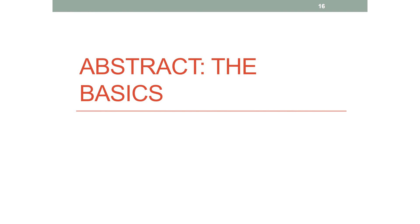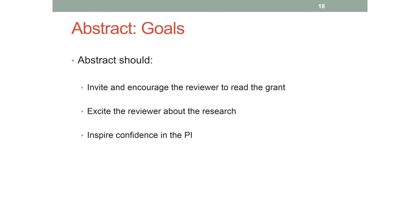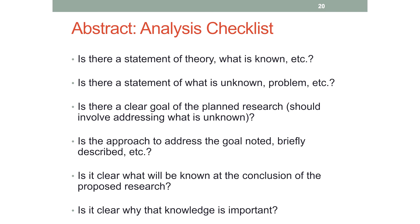Now looking at the abstract — here are the instructions you can refer back to. As Elena said, you should follow the instructions. The goals of the abstract are pretty similar to the aims: you want to invite and encourage the reviewer to read the grant, excite the reviewer about the research, and inspire confidence in the PI. You'll notice a good bit of overlap between your aims and abstract, and that's okay — you want people building up a clear idea of what the grant is about. The essential elements again include an overarching goal, something about the approach to orient people and attract appropriate expert reviewers, and highlighting significance and innovation.